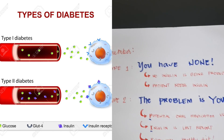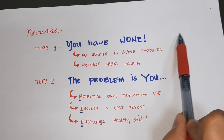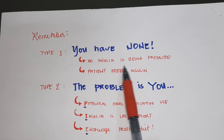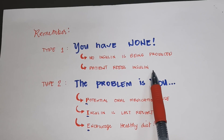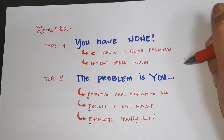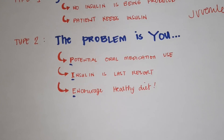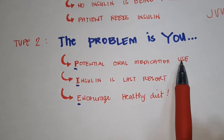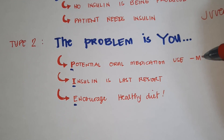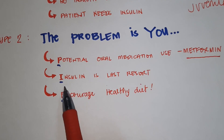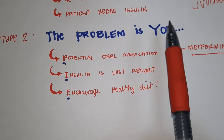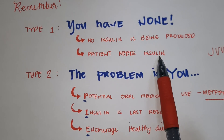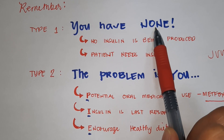For type 1 diabetes mellitus, you have none — no insulin is being processed, so the patient needs insulin over time. Type 1 is sometimes called juvenile diabetes mellitus. For type 2 diabetes, think PIE — potential oral medication is used, usually metformin. Insulin is the last resort. Encourage a healthy diet. The priority of insulin is for type 1, because they don't have any insulin.